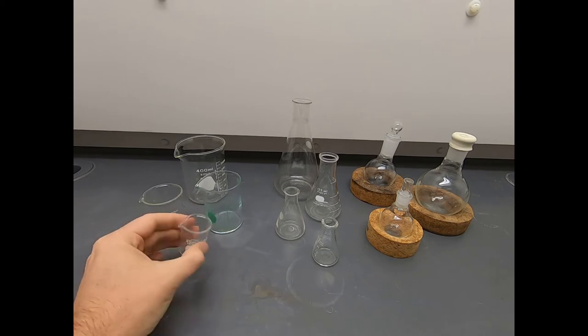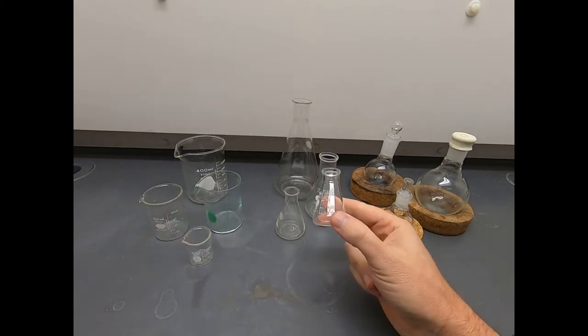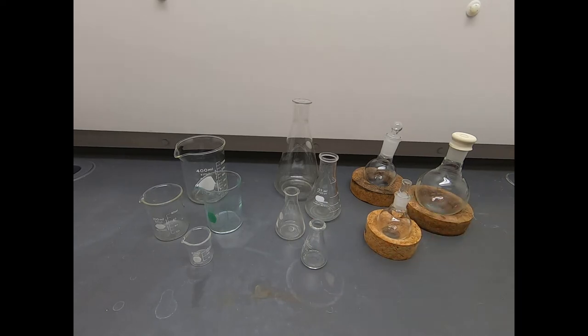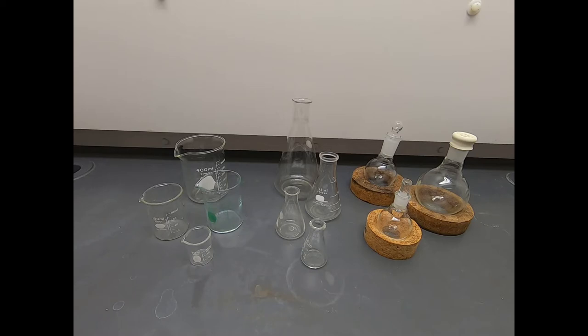For the most part, these are by far the most common types of glassware you encounter. On the left, we have beakers. In the middle, we have Erlenmeyer flasks. And on the right, we have the round bottom flask. Let's talk about what these are and what the most common use cases are for these types of glassware.